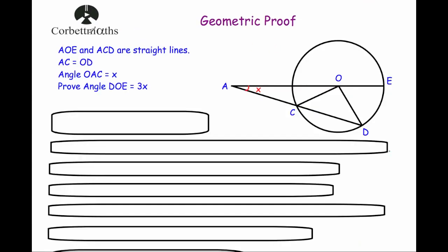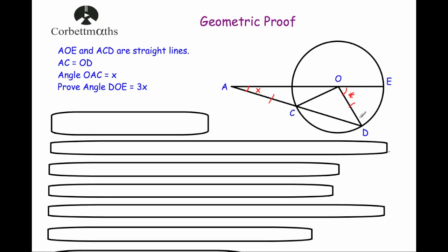Our last question: we've got a circle and we've been told that line AOE is a straight line, and line ACD is a straight line. We've been told that AC equals OD — I'll put little dashes on those lines to show they're the same length. We've also been told that angle OAC equals x. We've been asked to prove that angle DOE equals 3x. The first thing I notice is that OD equals AC, OD is the radius, so all the radii are the same length — OC and OE are also the same length, giving four equal lines.